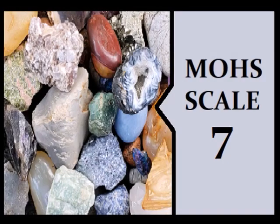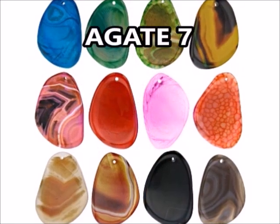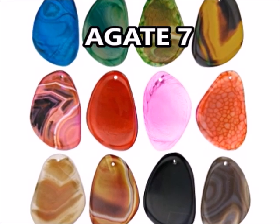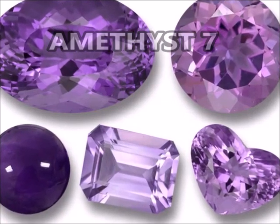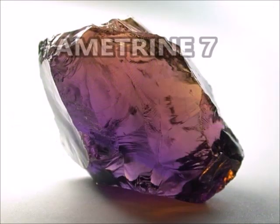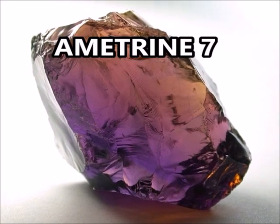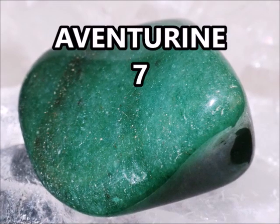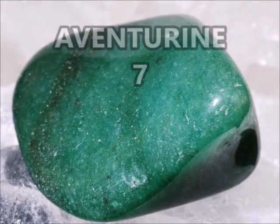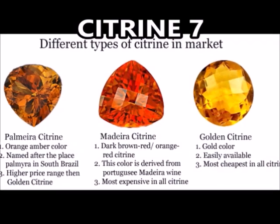Mohs scale 7. Agate, 7. Amethyst, 7. Ametrine, 7. Aventurine, 7. Smokey Quartz, 7. Tourmaline, 7. Tiger's Eye, 7.